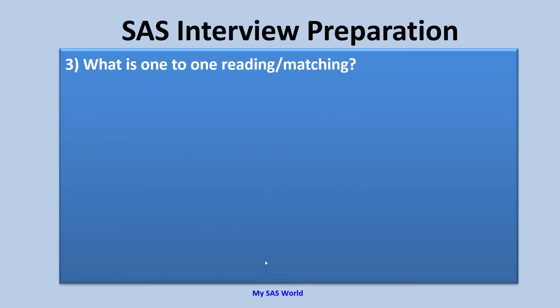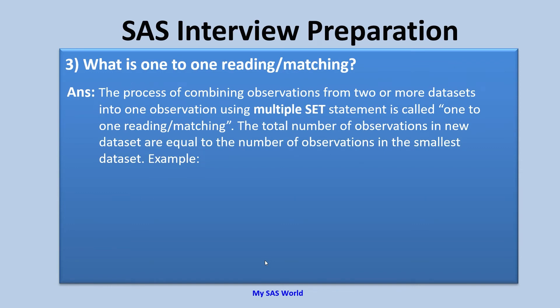What is one-to-one reading, also called one-to-one matching? The process of combining observations from two or more datasets into one observation using multiple set statements is called one-to-one reading or one-to-one matching. The total number of observations in the new dataset equals the number of observations in the smallest dataset. The key point an interviewer would ask is: how many observations would be in the output dataset? The answer is the number of observations in the smallest dataset.